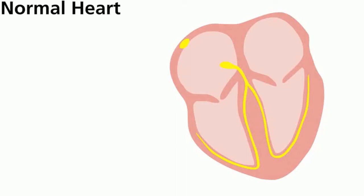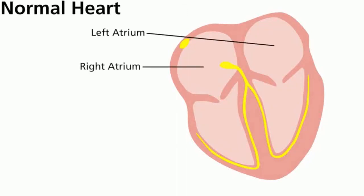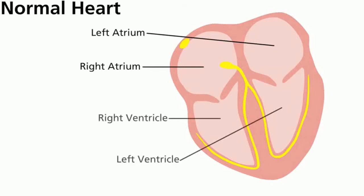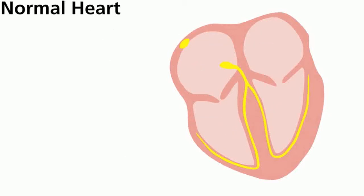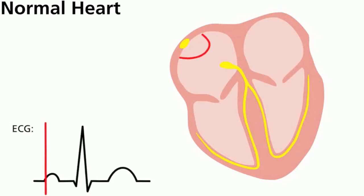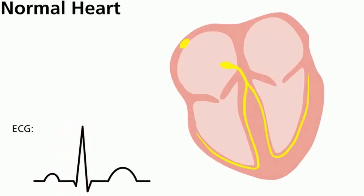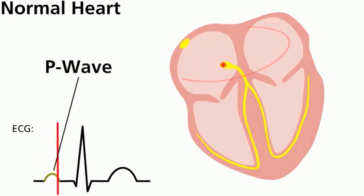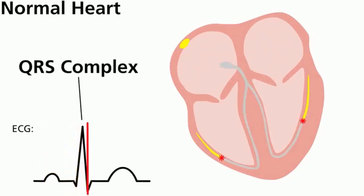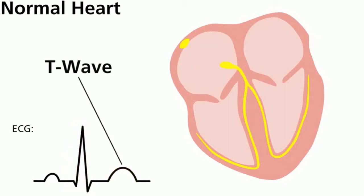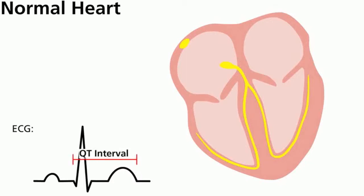Before we can understand Long QT Syndrome, it is necessary to review the normal electrophysiology of the heart. The heart has four chambers: two that collect the blood — the atria — and two that pump blood — the ventricles. The heart beats spontaneously due to well-developed cellular mechanisms. The electrocardiogram or ECG records the heart's electrical activity at the body surface. The normal heartbeat exhibits a P wave due to atrial depolarization, a QRS complex due to ventricular depolarization, and a T wave from ventricular repolarization. It is the time interval from the start of the QRS complex to the end of the T wave that gives rise to the term QT interval.